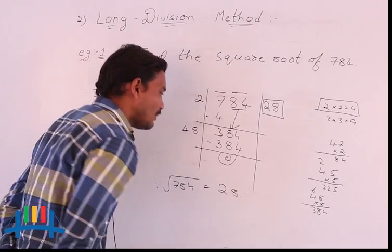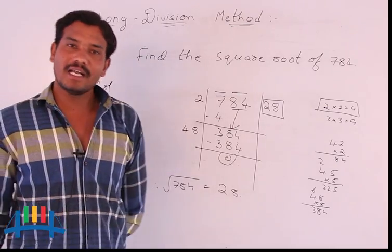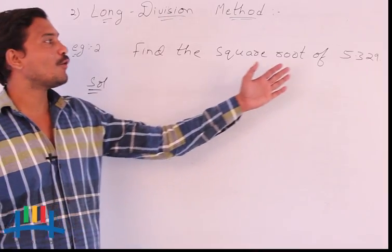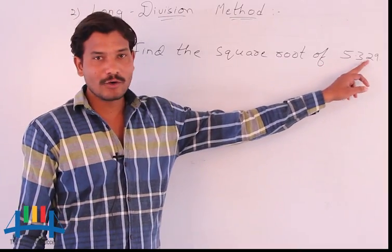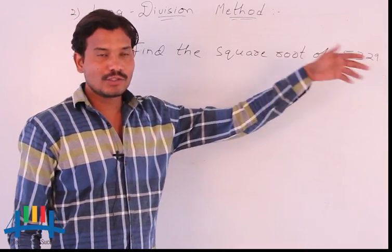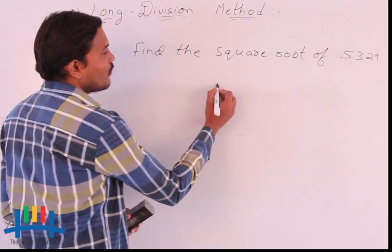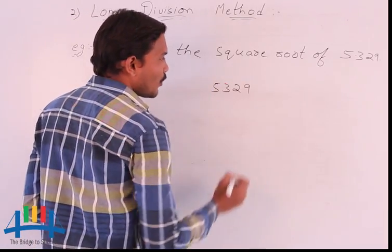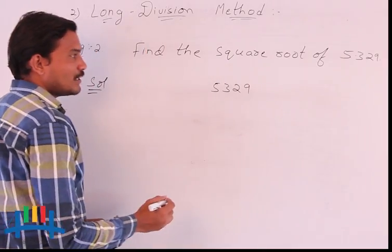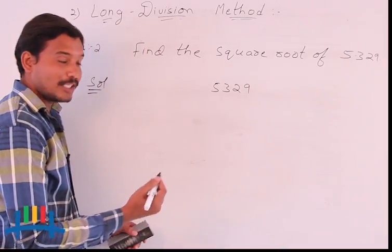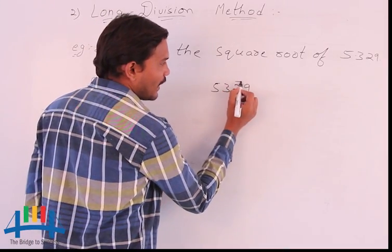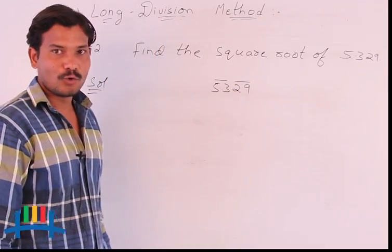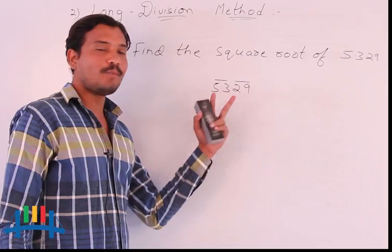This is the long division method to find the square root of a given number. Now let us consider the second example: find the square root of 5329, which is a 4-digit number. First, I group the number 5329 into pairs from the unit's place: one pair and one more pair, giving us two periods total.